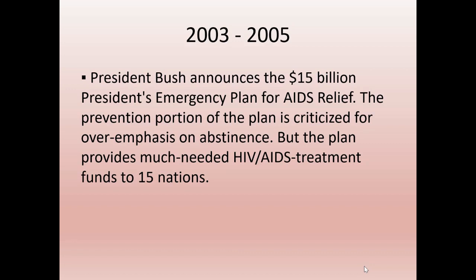In 2003 to 2005, President Bush announced $15 billion for the emergency plan for AIDS relief in Africa. The prevention portion is criticized because it teaches abstinence-only. One of the states leading abstinence-only education in the United States is Texas — they're also leading the country in unplanned teen pregnancies and sexually transmitted infections among teenagers.